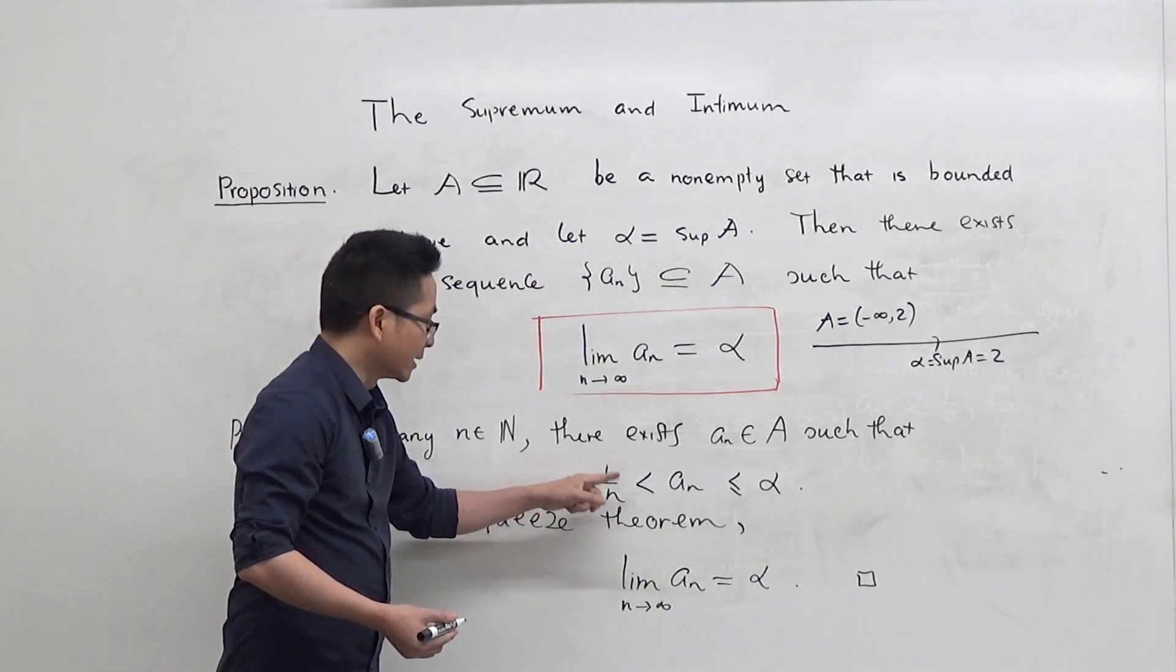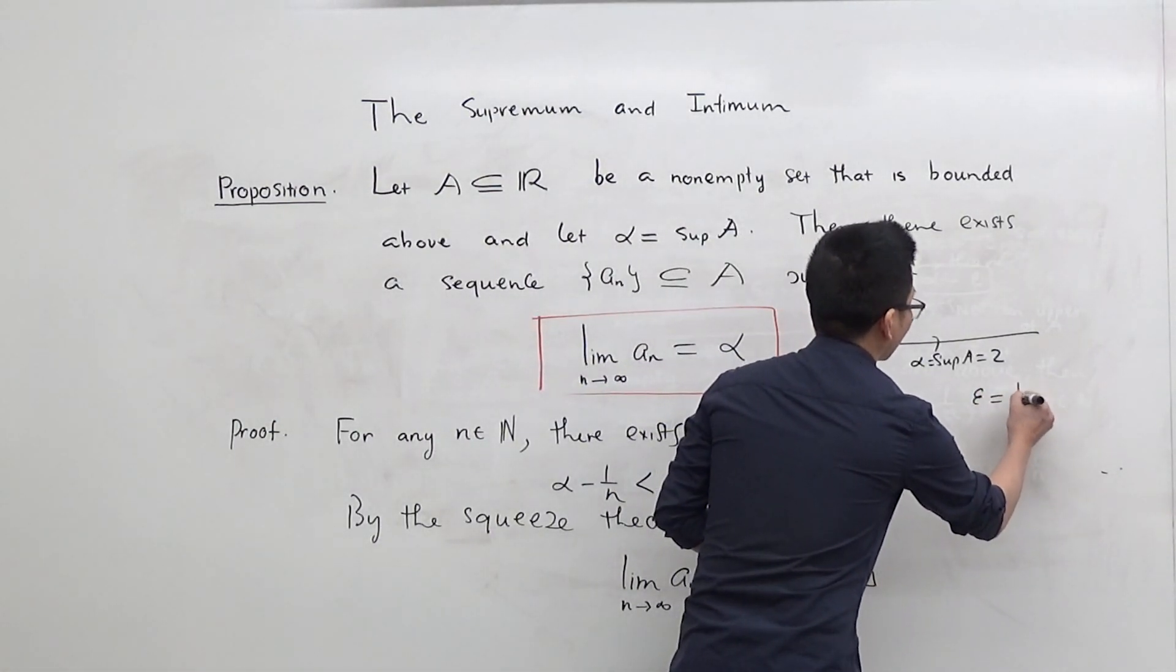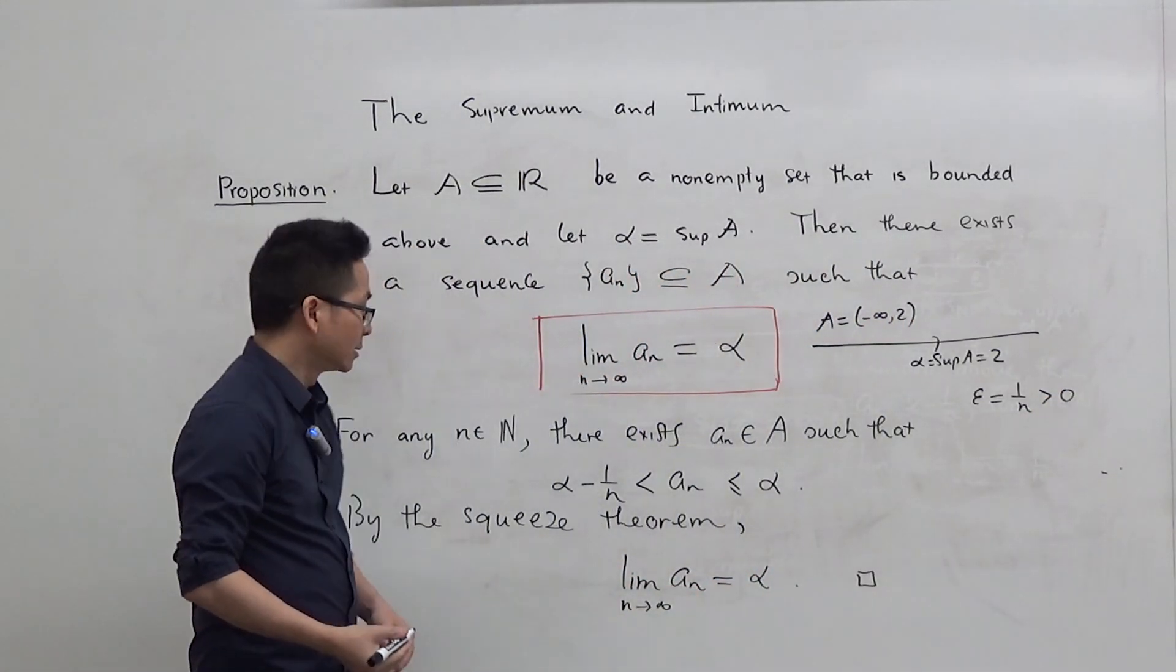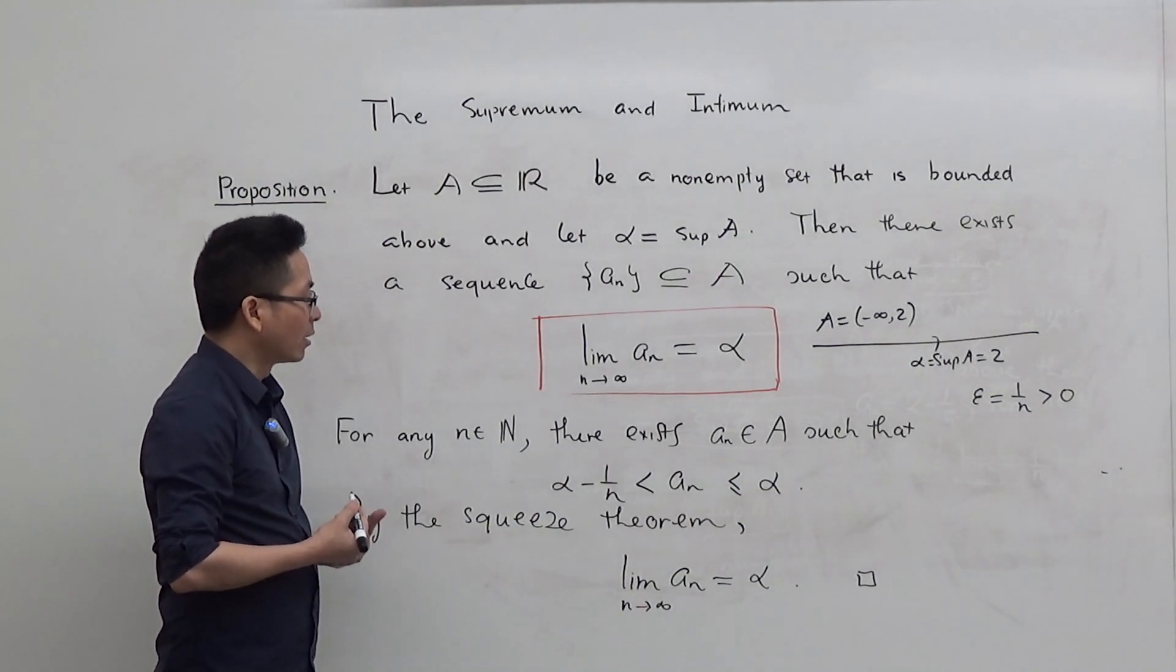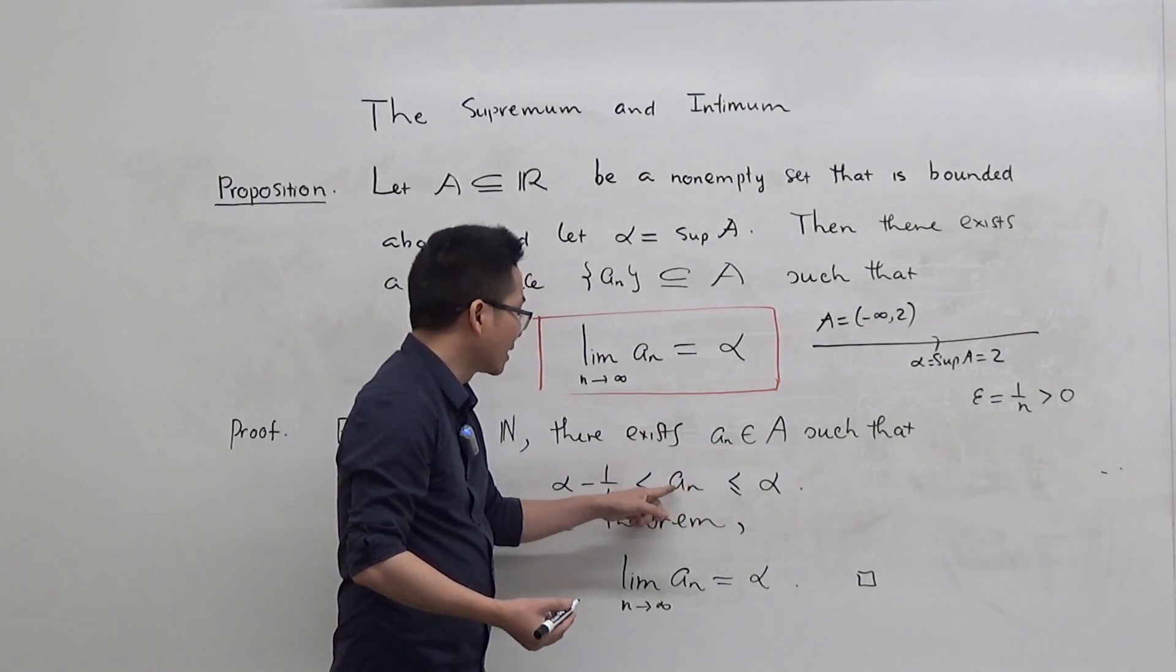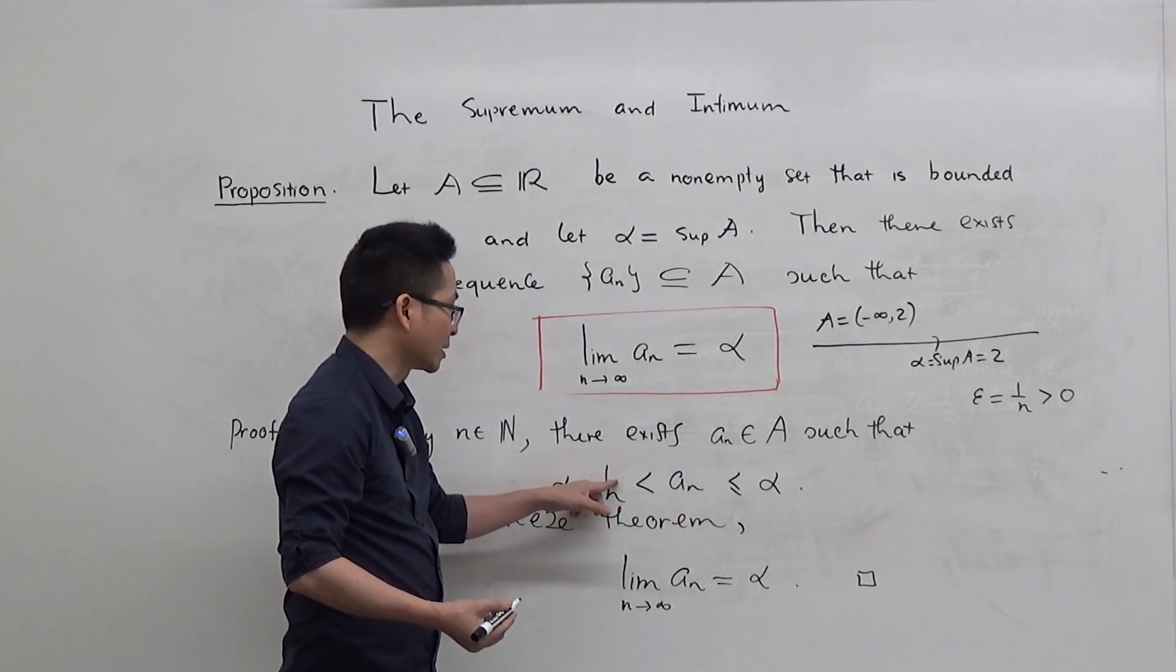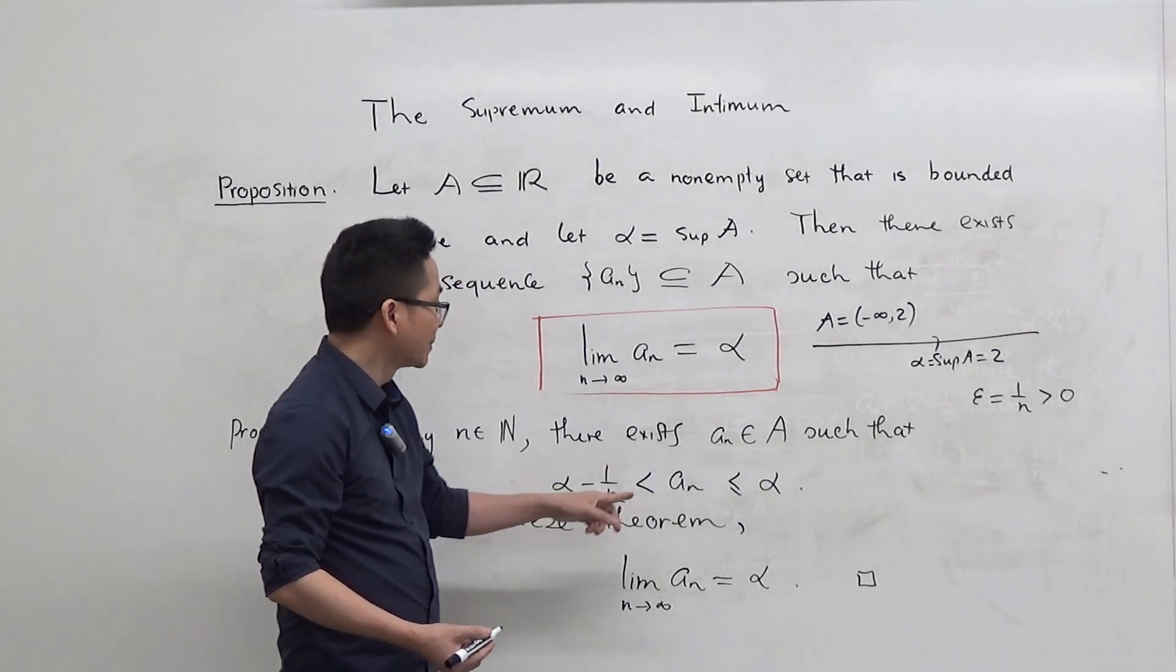in this situation, if you use epsilon equals 1 over n, you know that it is a positive number. So by the epsilon characterization for the supremum, there exists some A_n in A such that A_n is strictly greater than alpha minus epsilon, that is alpha minus 1 over n. And at the same time,